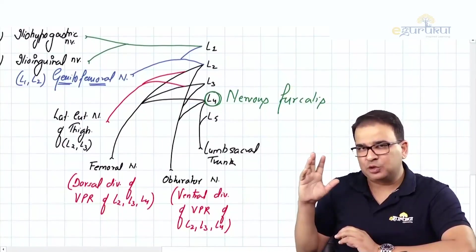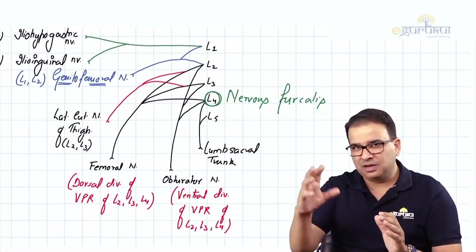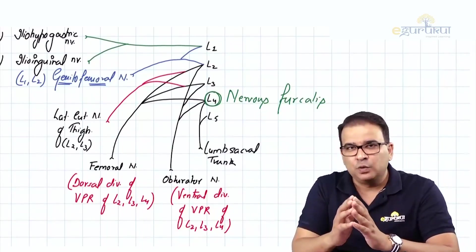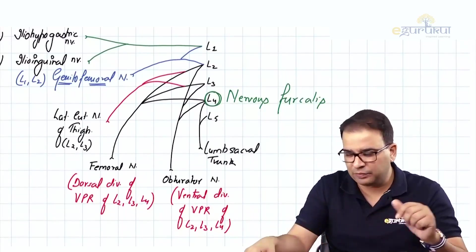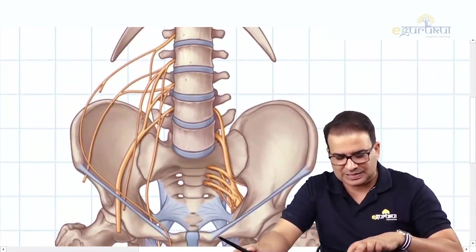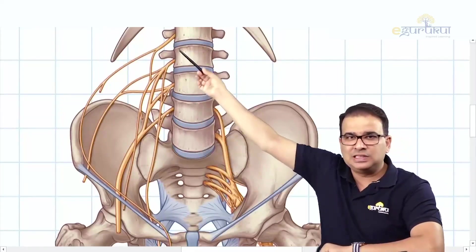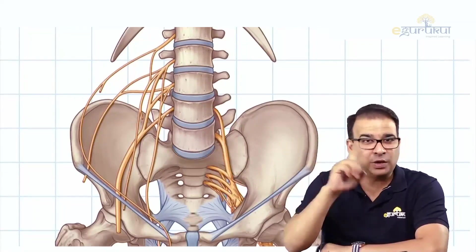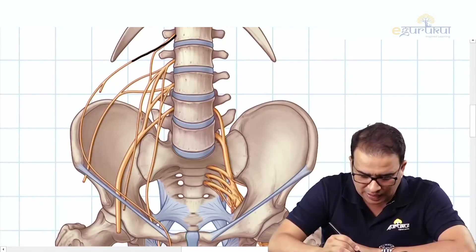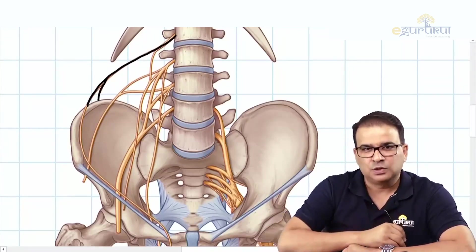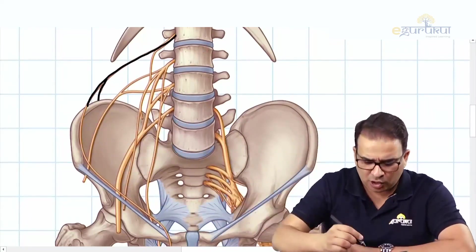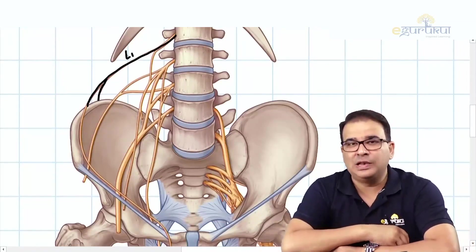Let me show you two images to correlate this. The first image shows the nerves without muscles so you can see how they are placed in the lumbar region. Looking at the image: the nerve coming from L1 divides into two branches — the ilioinguinal and iliohypogastric nerves. You can see the ilioinguinal nerve going all the way downward into the inguinal canal. So this is the L1 nerve giving off the iliohypogastric and ilioinguinal.